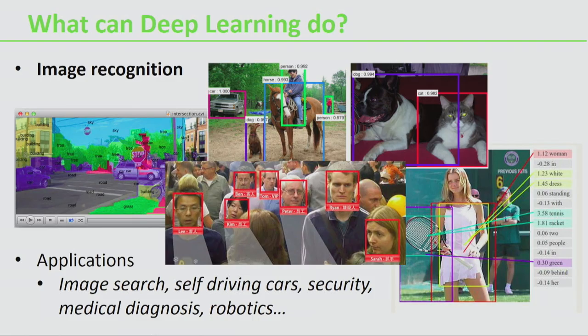That's a brief overview of deep learning, but what can it actually do? One of the main application areas where deep learning has really come to the fore in recent years is image recognition — recognising objects in images, classifying images, and analysing images.